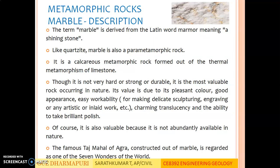Metamorphic Rock: Marble. The term marble is derived from the Latin word 'marmer' meaning a shining stone. Like quartzite, marble is also a parametamorphic rock. It is a calcareous metamorphic rock formed out of the thermal metamorphism of limestone. Though it is not very hard, strong or durable, it is the most valuable rock occurring in nature. Its value is due to its pleasant colour, good appearance, easy workability, charming translucency, and the ability to take a brilliant polish. It is also valuable because it is not abundantly available in nature. The famous Taj Mahal of Agra, constructed out of marble, is regarded as one of the seven wonders of the world.